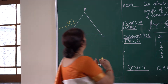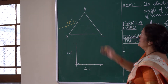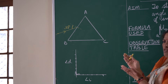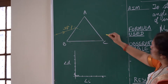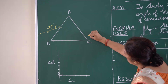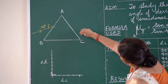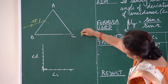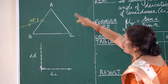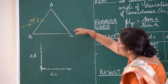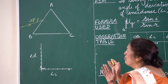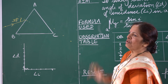Now you'll observe the image of these three pins from the other side of the prism. Even if you have to bend a little bit you can do that, and we'll try to fix the other three pins — keeping in view that the image of the first three pins and the pins which you are fixing all appear to be in a straight line.